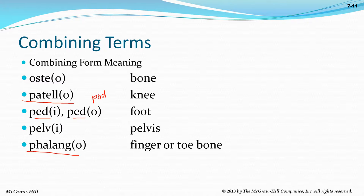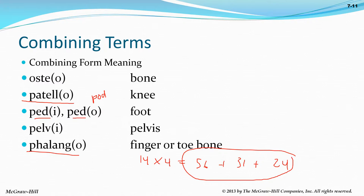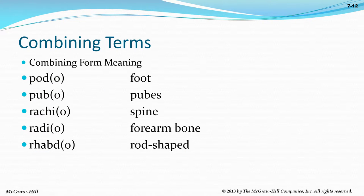Fingers or toes are phalanges — dactyl, phalanges, and digits are all interchangeable. You have 14 phalanges on each hand, and times both hands and feet that's 56 bone names you already know. You also have 31 spinal bones, and 24 ribs — that's already over 100 bone names covered. Pubis is the third part of the coxal bone making up the hip.